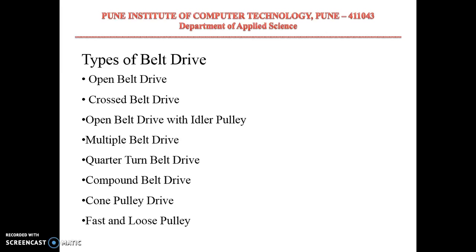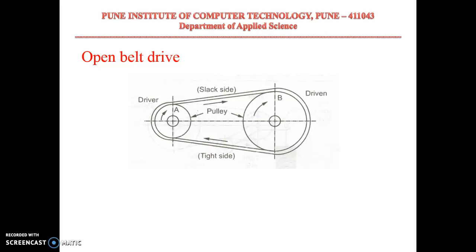Types of drives are classified as open belt and cross belt drives. Open belt drives are used when two shafts are parallel and rotating in the same direction. One important term is the arc of contact — this is the arc over which the belt makes contact with the pulley. Power transmission depends upon this arc of contact — the more contact the belt makes with the pulley, the more power can be transmitted.